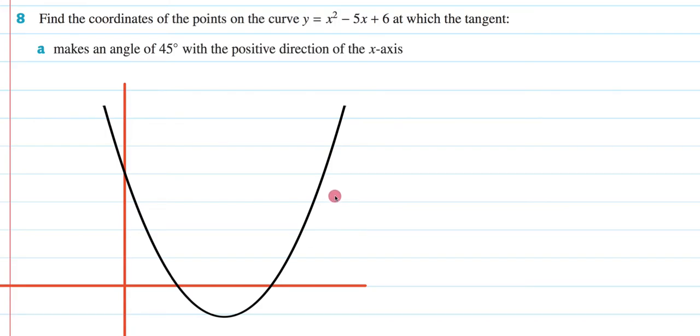We are going through exercise 17d, and in this video I'll be answering question 8a, which says: find the coordinates of the points on the curve y = x² - 5x + 6 at which the tangent makes an angle of 45° with the positive direction of the x-axis.